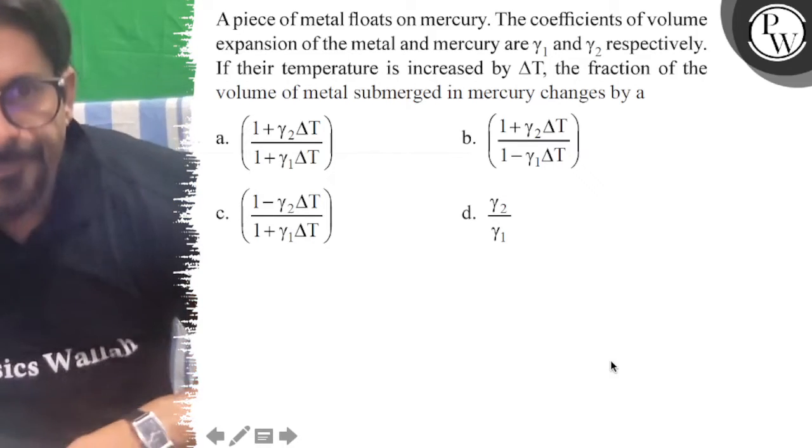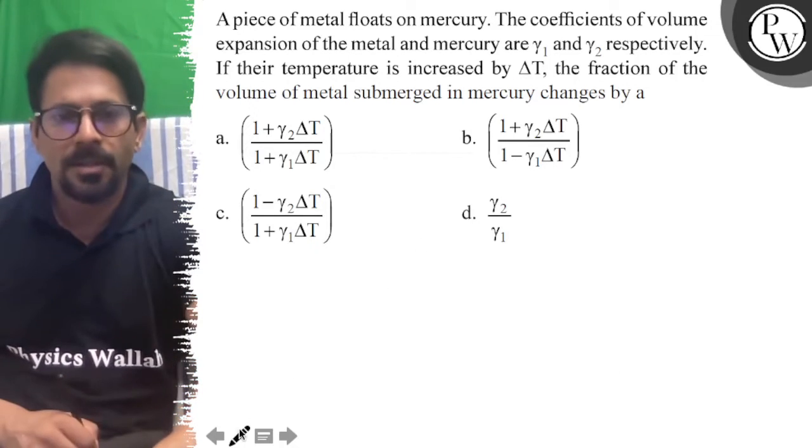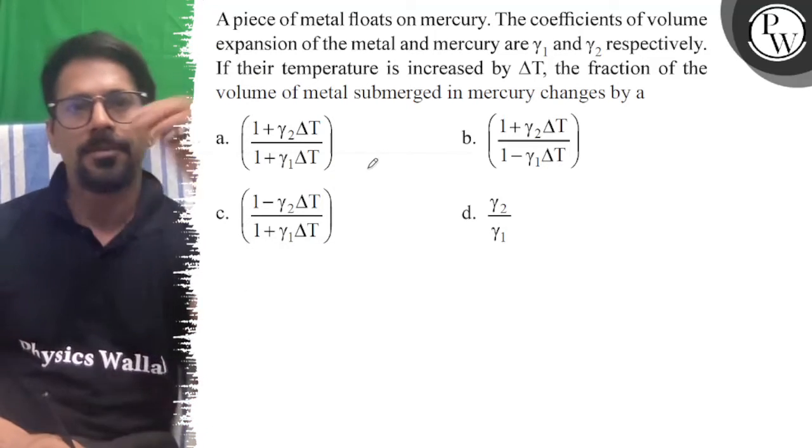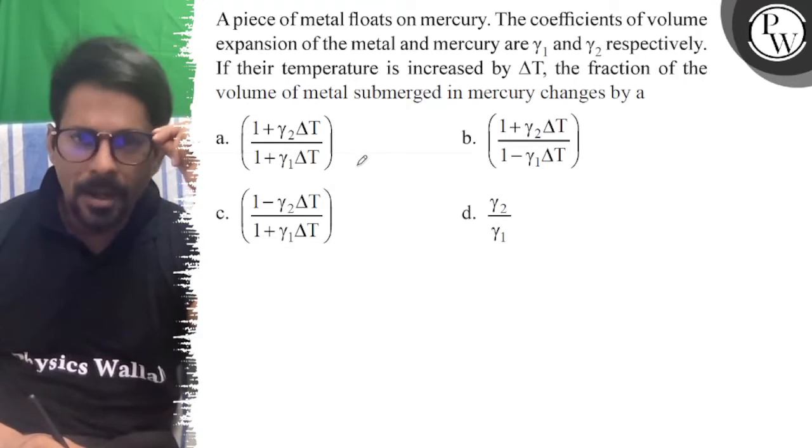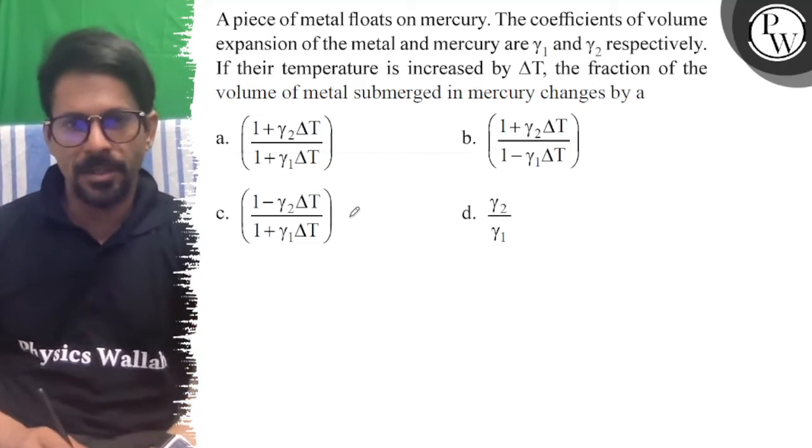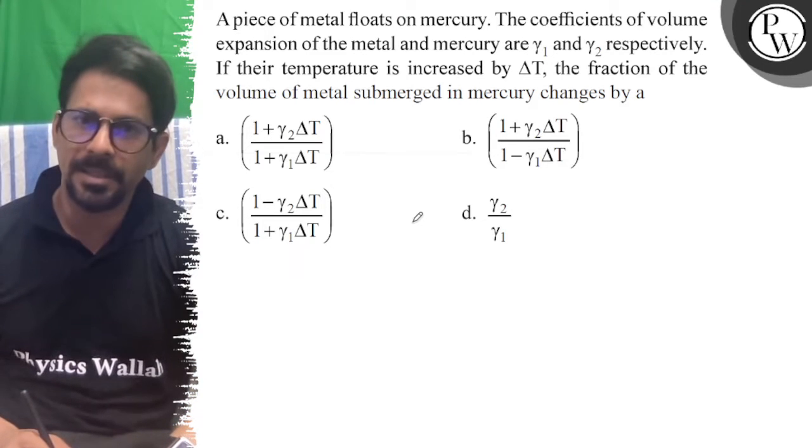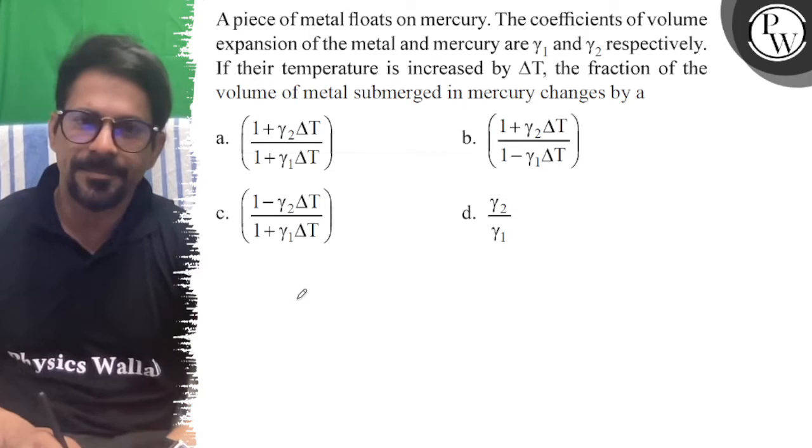Let's see the question. A piece of metal floats on mercury. The coefficient of volume expansion of metal and mercury are gamma 1 and gamma 2 respectively. If the temperature is increased by delta T, the fraction of the volume of metal submerged in mercury changes.